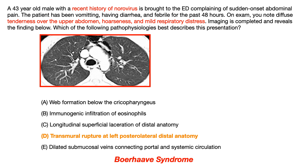The key feature of Boerhaave syndrome is that the rupture of the esophagus is transmural — full thickness. We can differentiate that from answer choice C, which is a superficial longitudinal laceration, known as Mallory-Weiss syndrome. Both presentations can look similar, but in Mallory-Weiss you can see small flecks of air in the mediastinum, whereas full severe pneumomediastinum pushes you toward Boerhaave syndrome and seals the diagnosis.